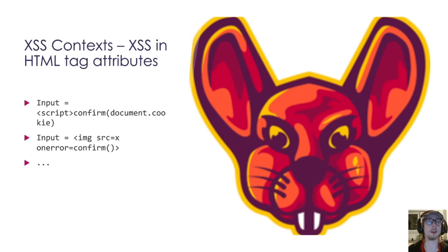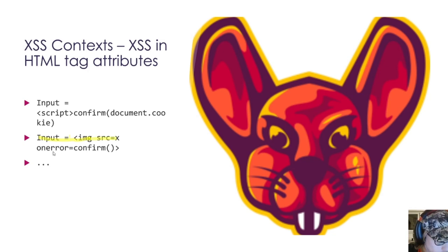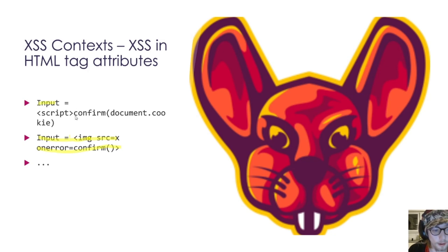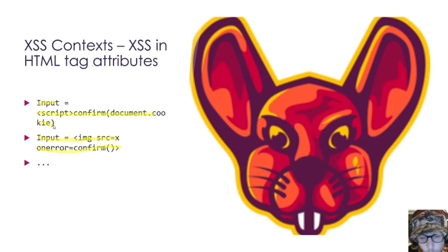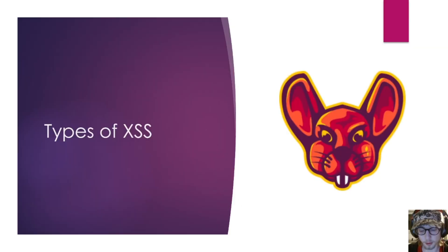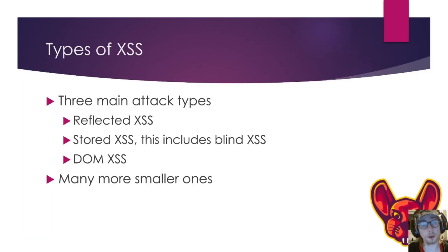For the XSS context in the HTML attribute, for example: input with 'src=x' and 'onerror=confirm' — inserting that into the document. You can also use a script tag, a video tag, or many different objects. Let's now talk about the types of cross-site scripting.